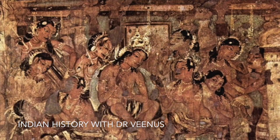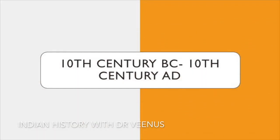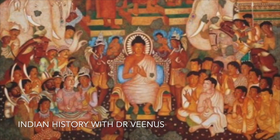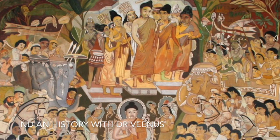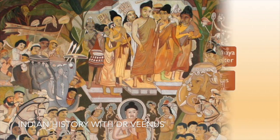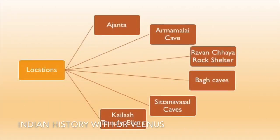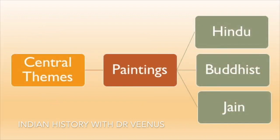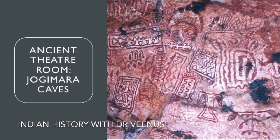Evidence of mural paintings can be found at several locations in India. The beauty of mural paintings can be seen at places like Ajanta, Arma Malai Cave, Ravanchaya Rock Shelter, Bagh Caves, Sittanivasal Caves and Kailash Temple in Ellora. Most mural paintings are in natural caves or rock-cut chambers. The paintings follow Hindu, Buddhist and Jain themes. Mural paintings were also made to adorn mundane premises, as seen in the ancient theatre room in Jogimara Caves.